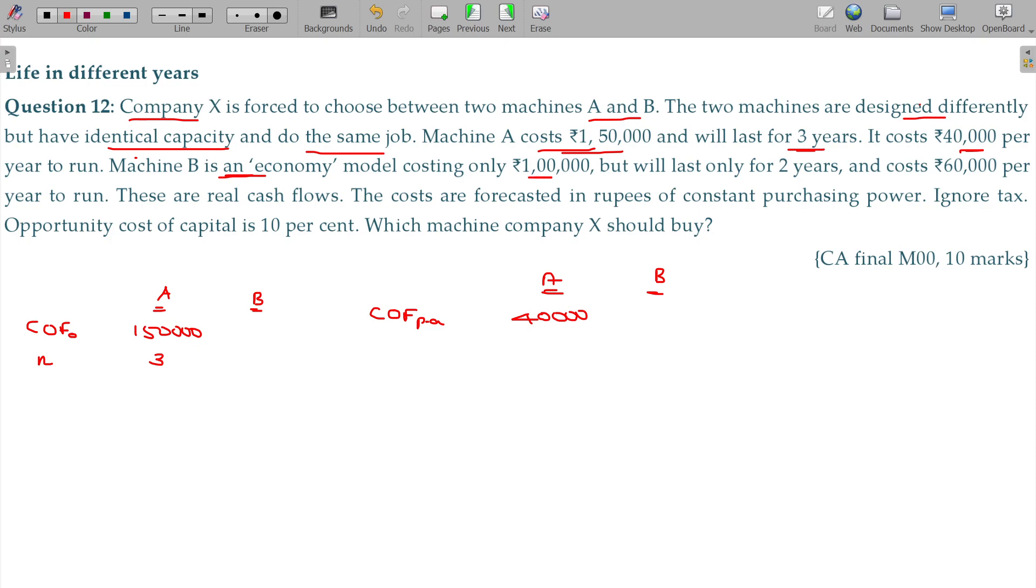Machine B is an economic model costing only 1 lakh, but will last for only 2 years. And costs 60,000 rupees per year to run. These are real cash flows. The costs are forecasted in rupees, constant purchasing power. Ignore tax, and opportunity cost of capital being 10%. Which machine company X should buy?